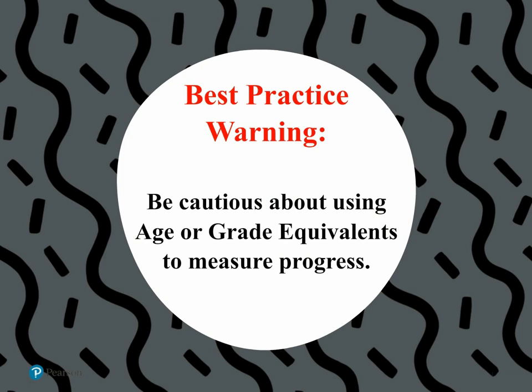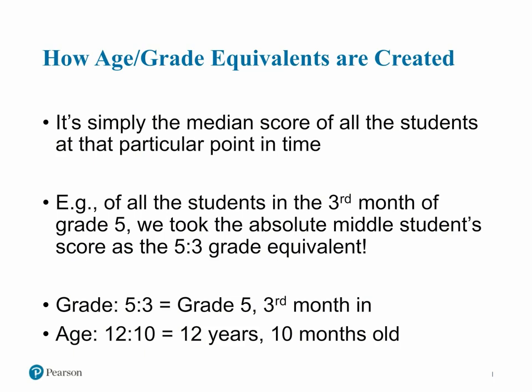In the final section of this presentation, I'm going to talk about a best practice warning, which is to be cautious about using age or grade equivalents when measuring progress. Age and grade equivalents are simply the median score of all the students at a particular point in time in the norm sample. For example, all the students in the third month of grade five — we took the absolute middle of those students' scores as the 5-3 grade equivalent. The grade equivalent or age equivalent is not an actual representation of that child's age or grade. So 5-3 is grade five, third month, or age 12-10 is the 12 years, 10 month old — those are the median scores for those particular points in time.